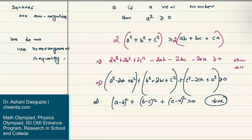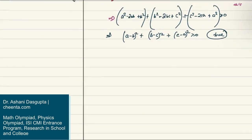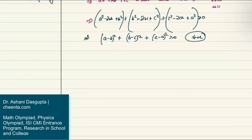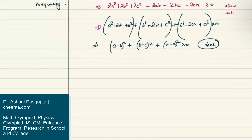We can use this 'squares are non-negative' strategy to talk about the Cauchy-Schwarz inequality. Let's quickly discuss it a little bit.